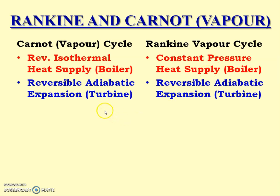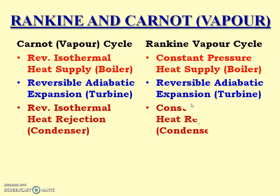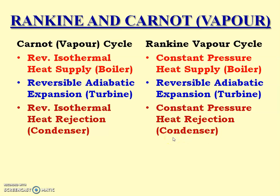The second process is the same for both Carnot vapor and Rankine vapor: reversible adiabatic expansion that happens in the turbine. The third process is heat rejection in the condenser. In Carnot vapor cycle, heat is rejected at a reversible isothermal process, but in Rankine vapor cycle, heat is rejected at a constant pressure process.